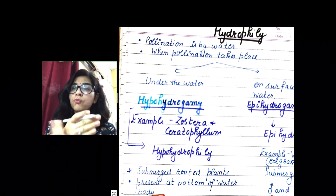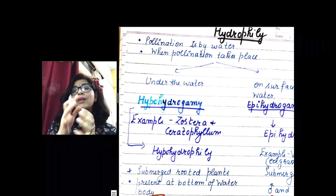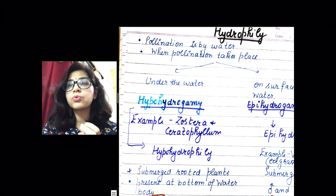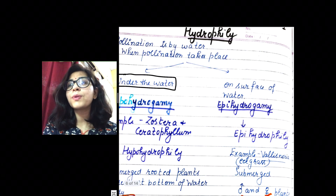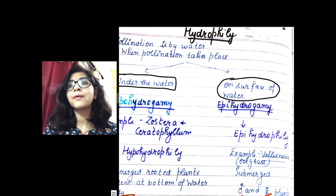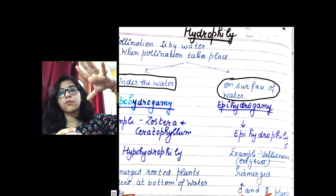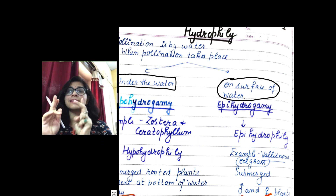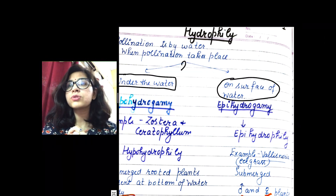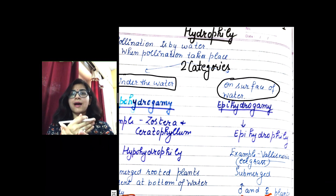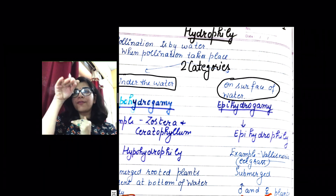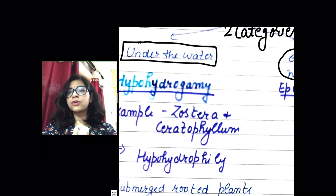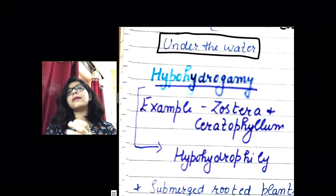Pollination by water can be of two types: one that takes place under the water, and another where plants pollinate on the surface of water. So hydrophily has two categories — under the water, for submerged plants, and on the surface of the water.